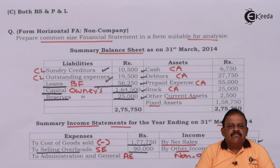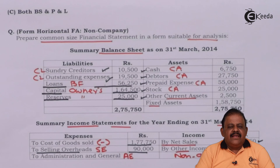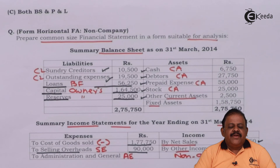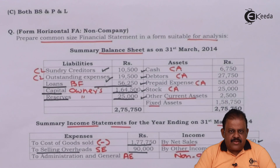Thus, as per the requirement of the question, we have converted the horizontal income statement and balance sheet into vertical format, and then prepared the common size income statement and common size balance sheet for a non-company type of business — it may be a proprietary business. Thanks for watching this video. Stay tuned with Ikeda and subscribe to our channel. Thank you.